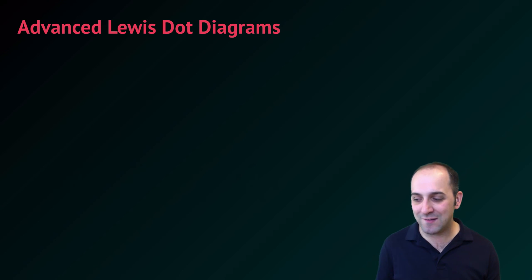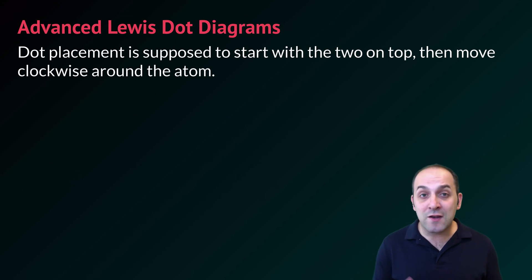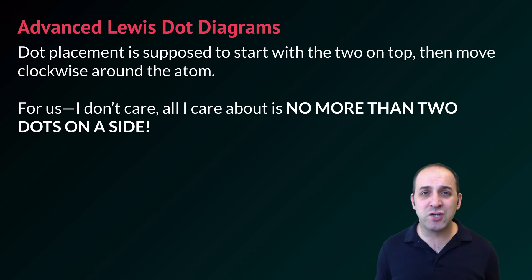Let's talk about some advanced considerations. Technically, dot placement should start with two dots on top, then move clockwise around the atom. I don't really care about that. All I care about is that you have no more than two dots on any side of the element symbol. Student beware if you have a different teacher.